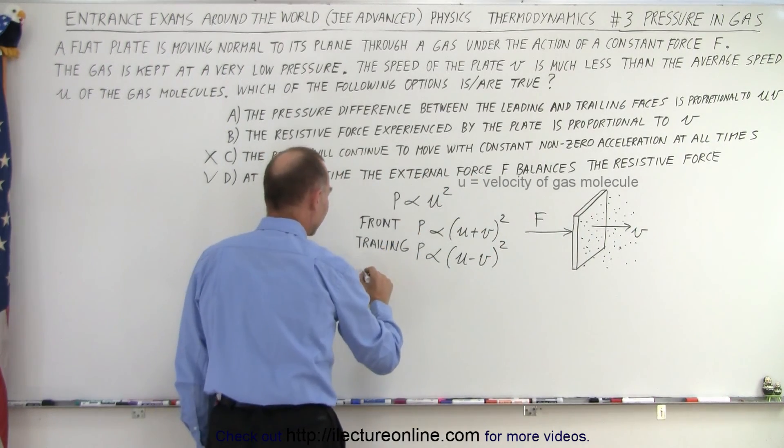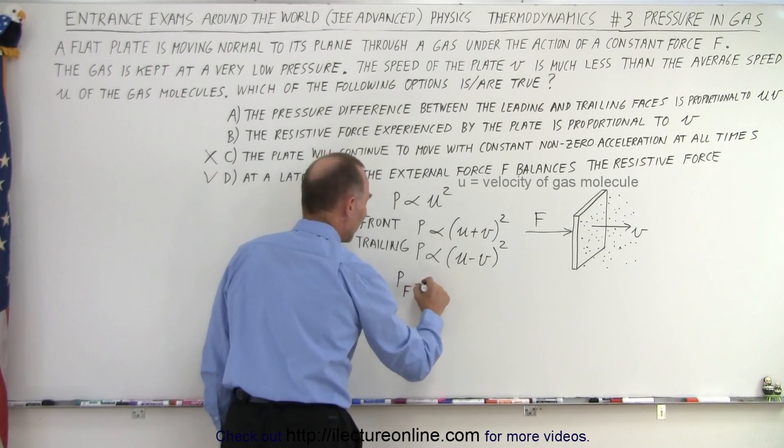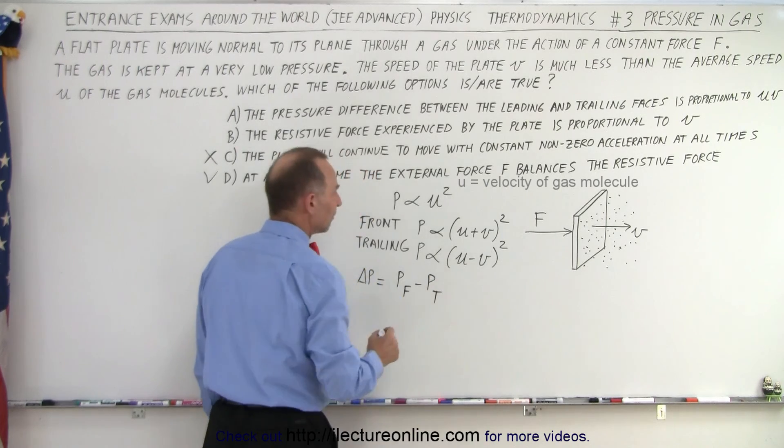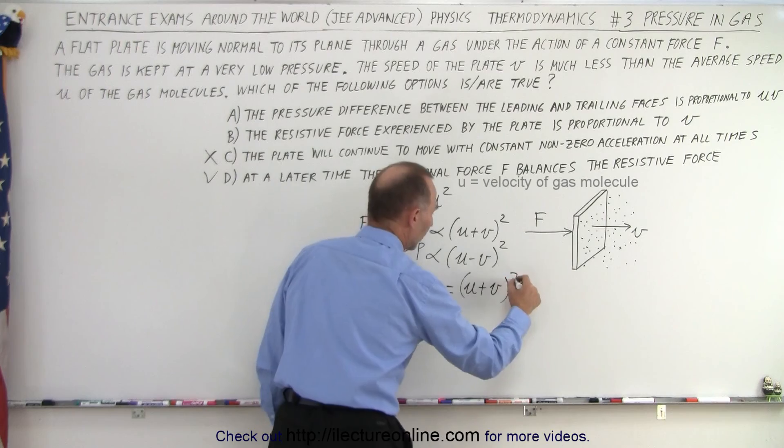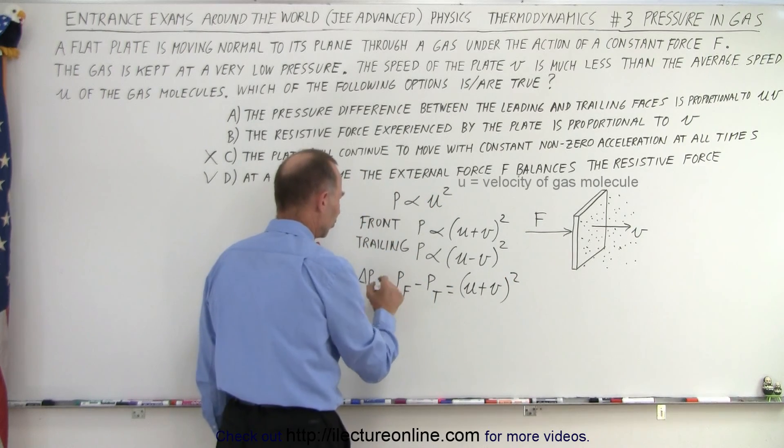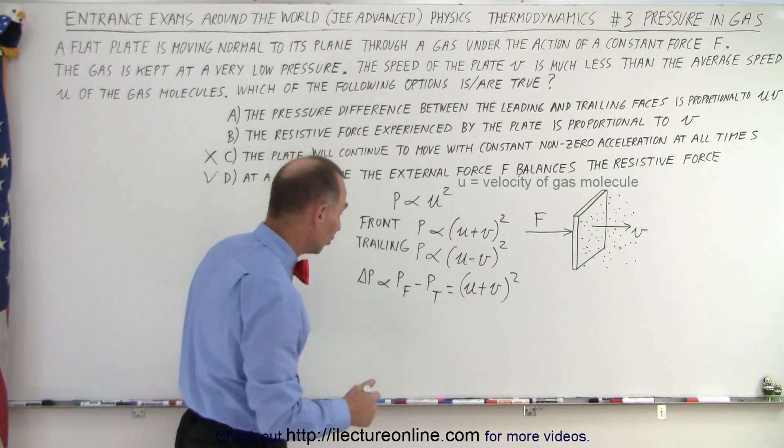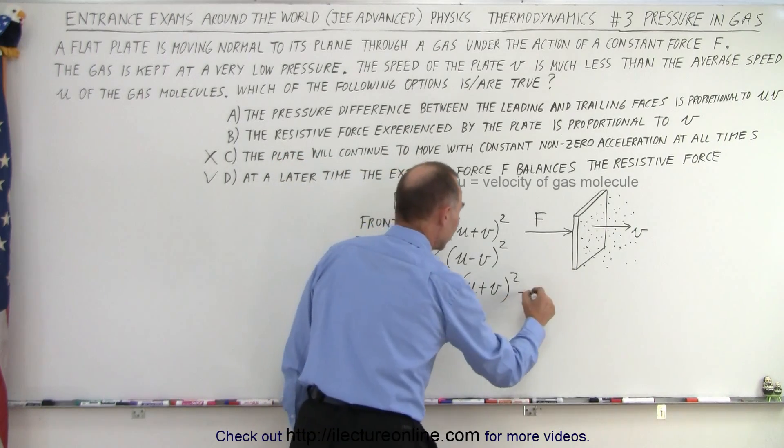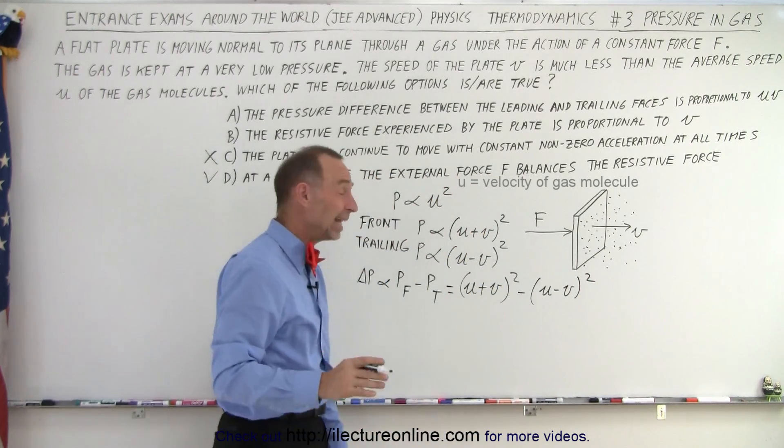And so the difference in the pressure is therefore the pressure in the front minus the pressure trailing. So in this case that would be U plus V quantity squared, and of course we should be proportional to that because it's not equal to, we need some other terms, minus U minus V quantity squared. Now let's see what that adds up to.